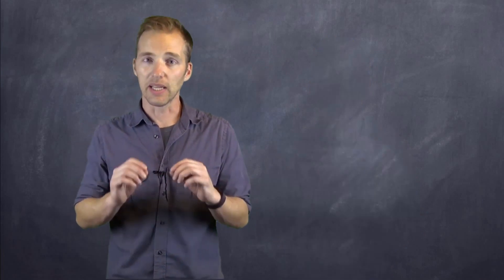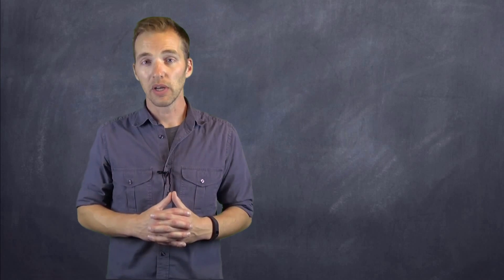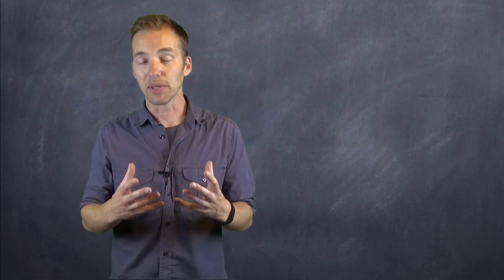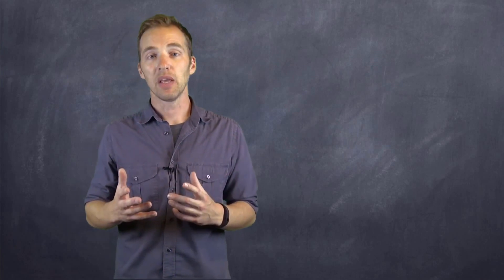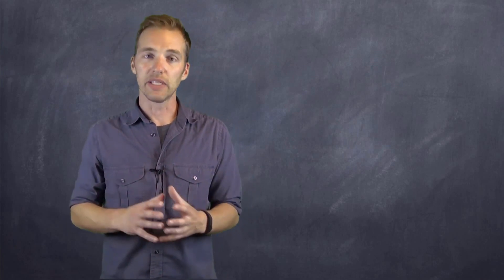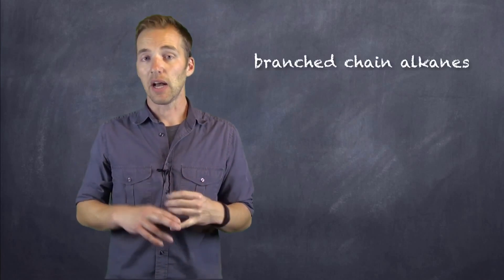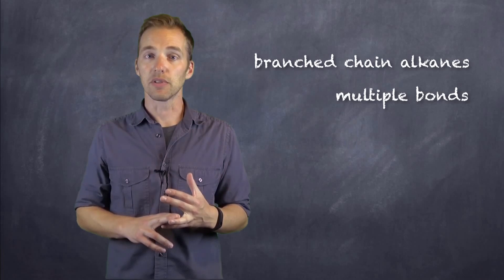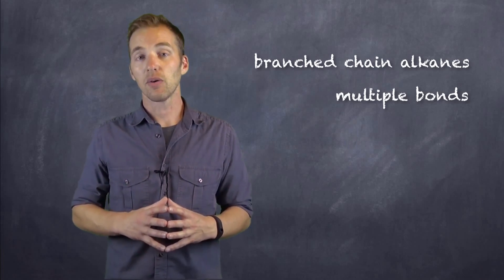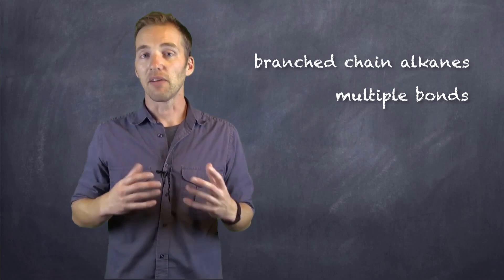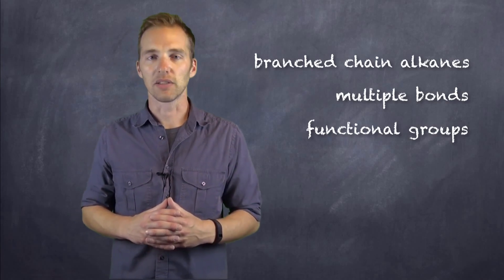Hopefully this video very quickly outlined how and why we classify organic compounds as we do. It introduced you to the idea of hydrocarbons and alkanes and how we name them and represent them. In further videos, I'm going to get into how we name and identify branch-chained alkanes. I'm going to talk about multiple bonds in terms of double and triple bonds between adjacent carbons in the chain. And we're going to take a look at functional groups and how we can identify those in organic compounds as well. Thanks for watching.